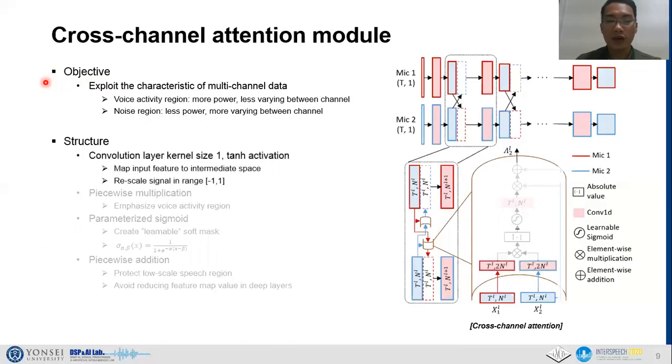The detailed structure of attention block is as follows. Firstly, we apply 1D convolution layer with hyperbolic tangent activation function to map the input feature map to the intermediate space. The tanh activation function rescales the signal into the range of minus 1 and 1, which is useful for parameterized sigmoid function later on. The convolution layer can be used to reduce the complexity of the attention module by reducing the number of input feature map channels. Secondly, piecewise multiplication is applied in order to highlight the voice activity region part. The absolute value is taken in order to indicate the noise path near the value of 0 and the clean path near the value of 1.